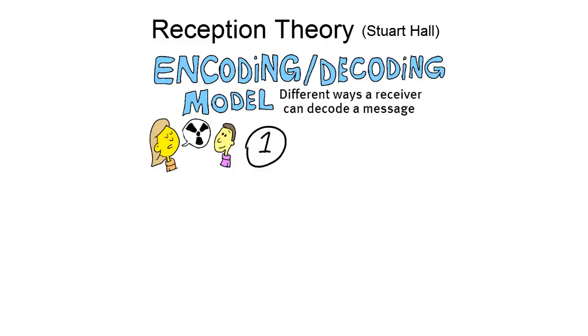The sender, politician Rose, has some intent when she encoded or composed her message. If Jake completely internalizes the message, and decodes it in the way Rose intended, he agrees and is going to vote for her, this is the preferred reading.